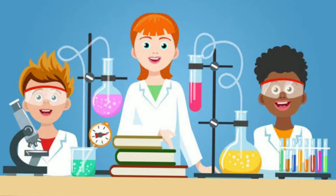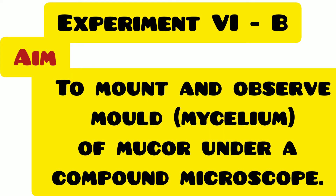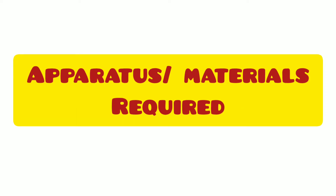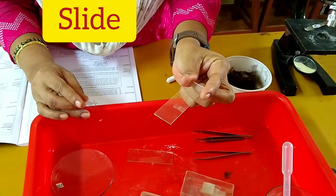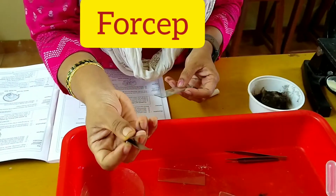Hi students. Today we are performing experiment 6B. The aim is to mount and observe mold of Mucor under a compound microscope. The other common name for the Mucor is bread mold. What you need is a slide, cover sleeve, and forcep.